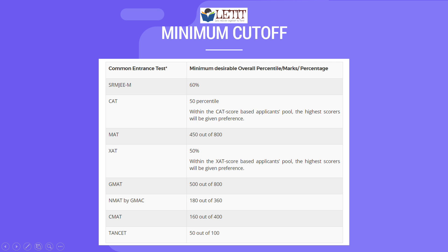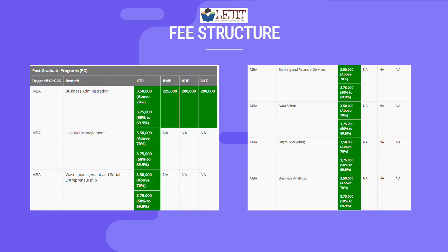For MAT, a score of 450 out of 800 is required to secure a seat. You can also use GMAT, NMAT, or CMAT scores. You can see the details on the fee structure, with different courses having different fee structures on the official website.